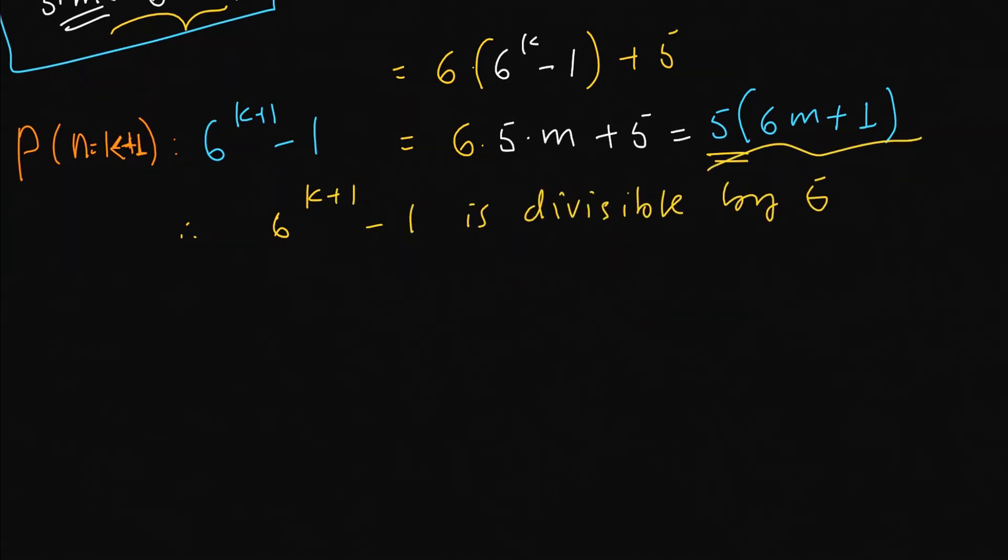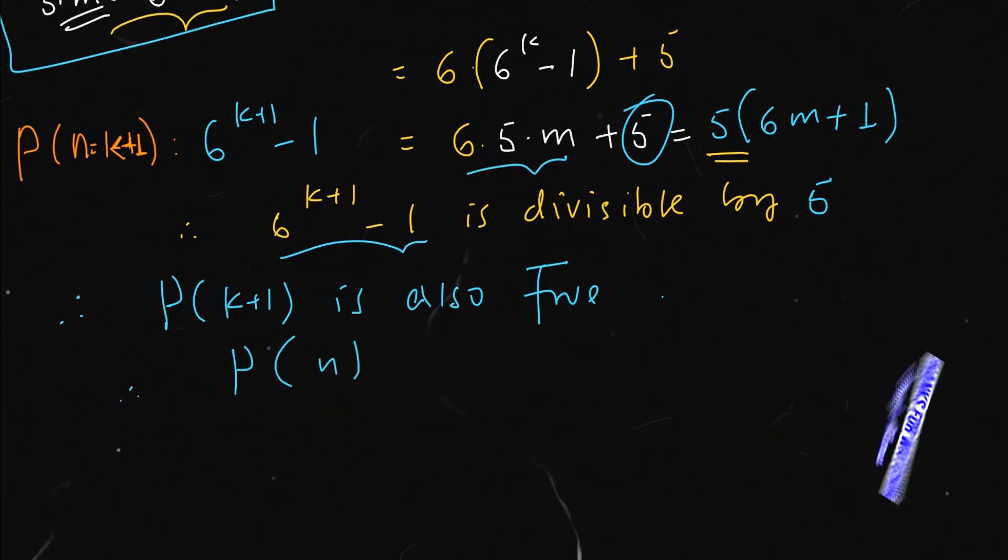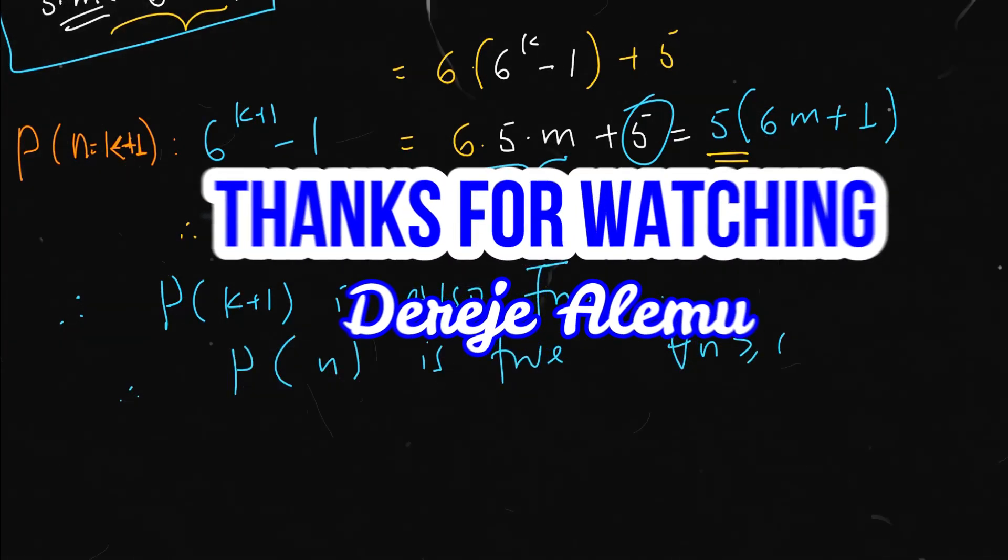P(k+1) is also true. The induction step is satisfied. Therefore, you can conclude that P(n) is true for all n greater than or equal to zero.